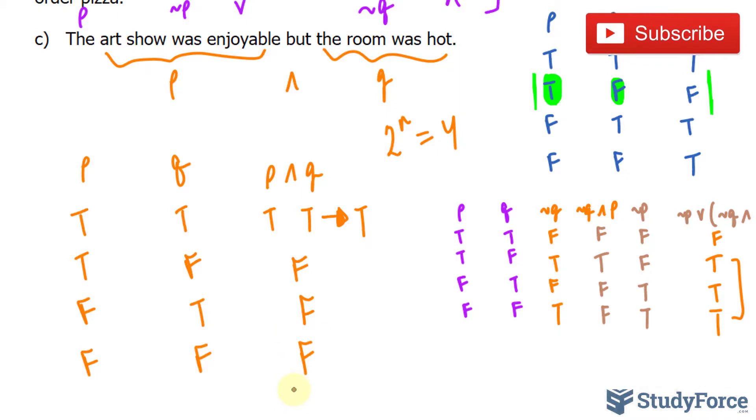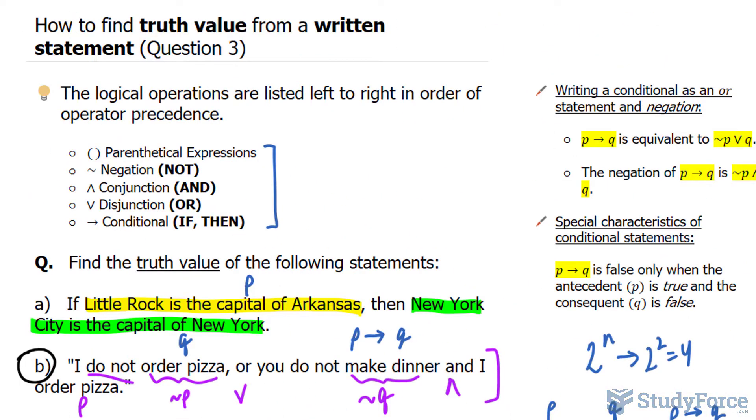So the only truth value is that both of these are true for the statement to be true. And there you have it. That is how to find the truth value from a written statement.